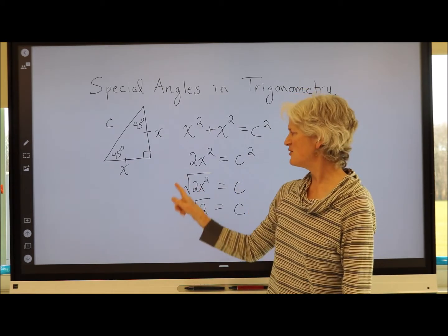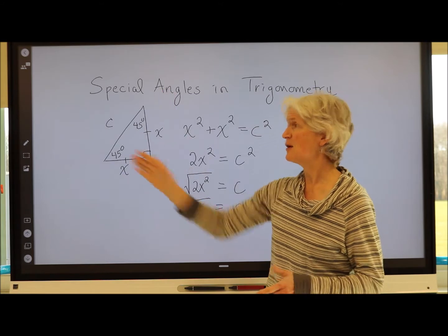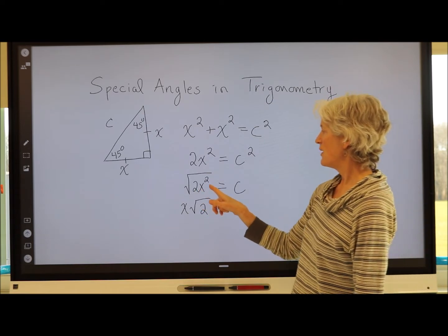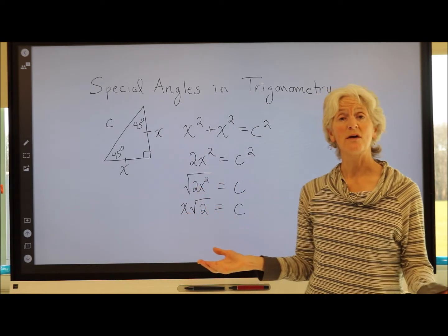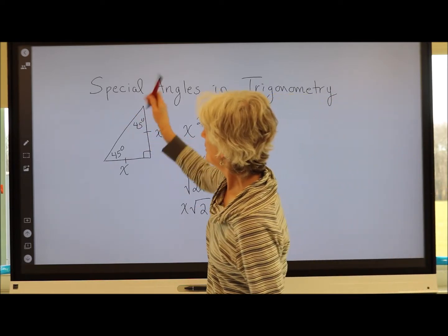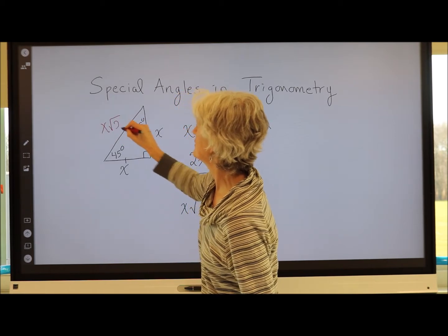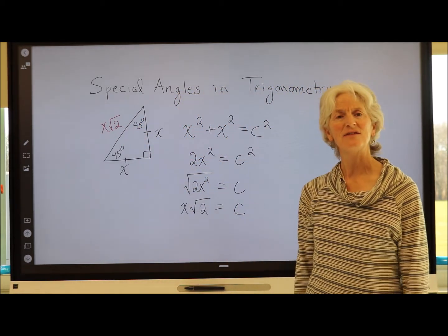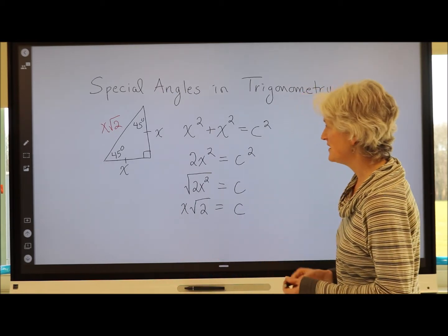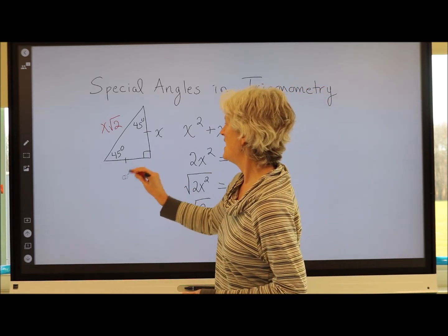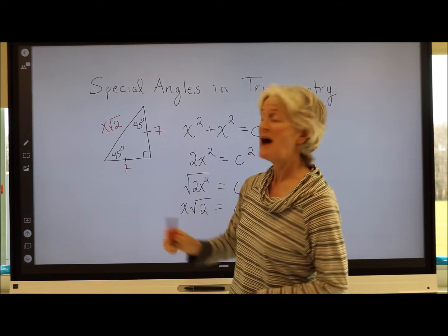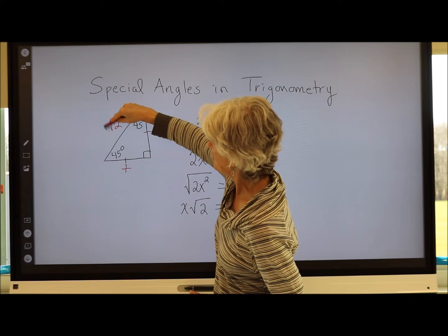Technically I should have a plus or minus, but since I'm dealing with length, negative length doesn't make sense. The square root of x² is x, and the square root of 2 is just √2, so the hypotenuse is x√2. This is always going to be the case in a 45-45-90 triangle. For example, if each leg is 7, then the hypotenuse is going to be 7√2.